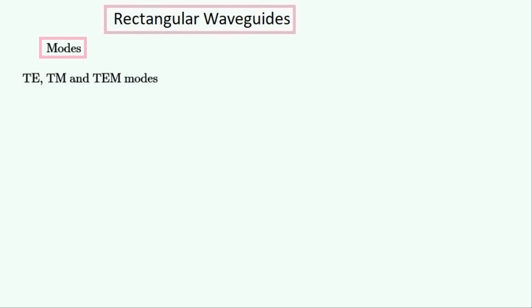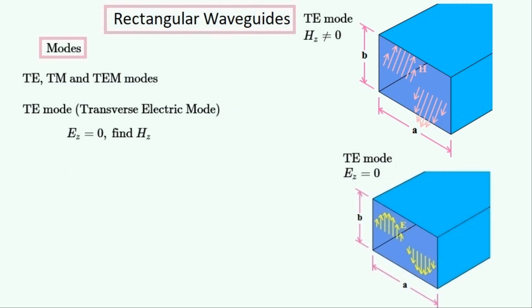To solve for the rest of the wave in the X and Y directions we have to pick a mode, which can be either transverse electric, transverse magnetic, or transverse electric and magnetic. In the transverse electric mode, or TE mode, the electric field is transverse in the waveguide, so EZ is set to zero and HZ is left to be calculated using this fact.